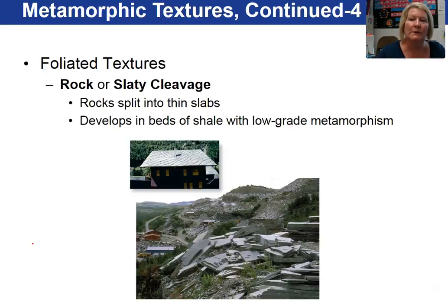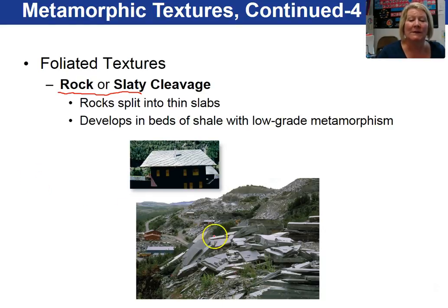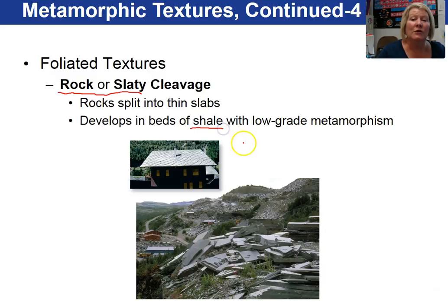I want to introduce some foliated textures now. First we have rock or slaty cleavage. This is where the rocks split into thin slabs, as you can see here in this picture. This is a slate — slate is the name of the metamorphic rock with this type of foliated texture. The parent is a shale. Shale is a detrital sedimentary rock, and when it is subjected to low-grade metamorphism, it turns into a slate.